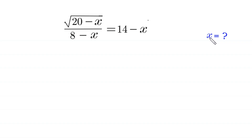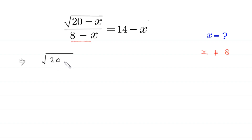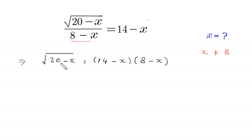Since (8 minus x) is in the denominator, x cannot equal 8. If we multiply both sides by (8 minus x), this implies that the square root of (20 minus x) is equal to (14 minus x) times (8 minus x).